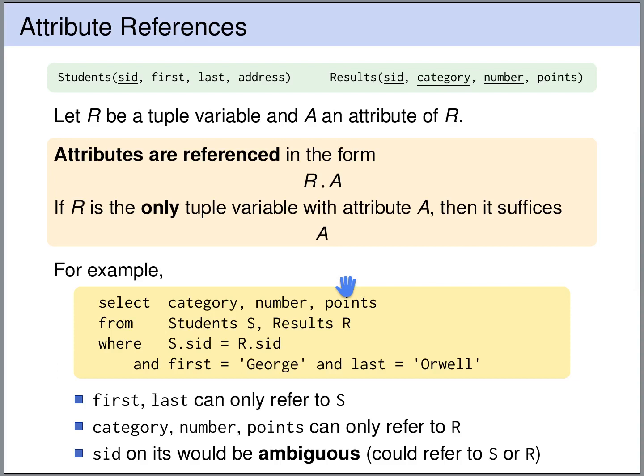The reason we are allowed to do this is that category, number, and points only appear in the results table. They do not appear in the students table. So it's clear that these attributes refer to R and not to the tuple variable S. Likewise, in the WHERE clause we write first and last without writing explicitly S.first and S.last. Because first and last only appear in the students table and not in the results table.